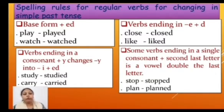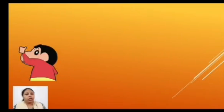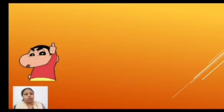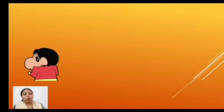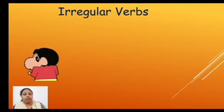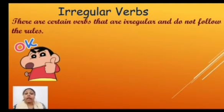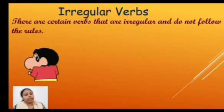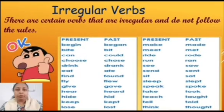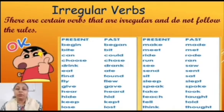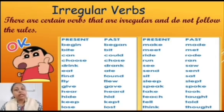So children, that was all about the spelling rules for regular verbs. Now, do you remember Shin? He does not follow any rule. Similarly, there are a few verbs which are very naughty and don't follow any rule — we call them irregular verbs. Irregular verbs are certain verbs that do not follow the rules. For example: 'begin' changes to 'began', 'bite' to 'bit', 'can' to 'could', 'choose' to 'chose', 'drink' to 'drank', and 'eat' to 'ate'. The list is very long!